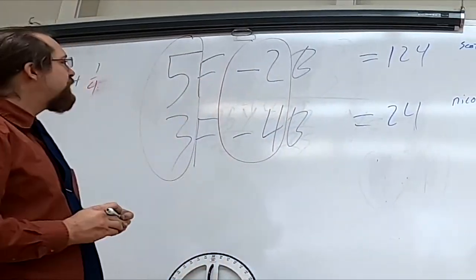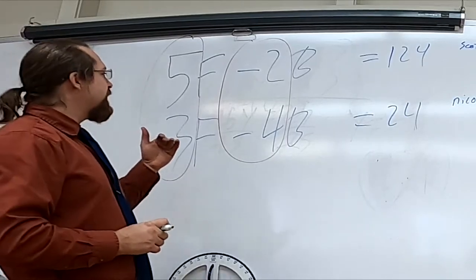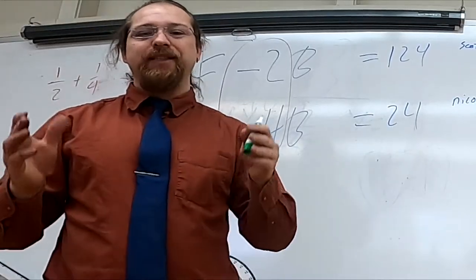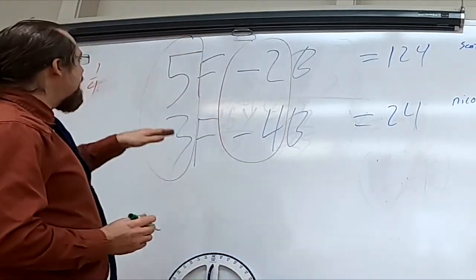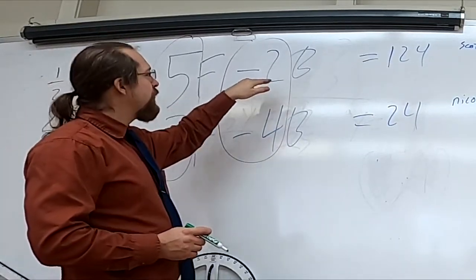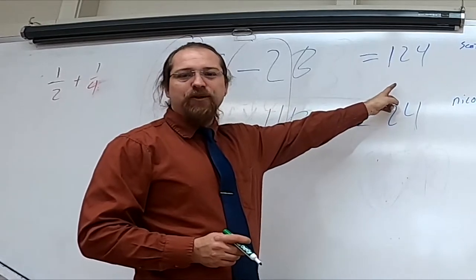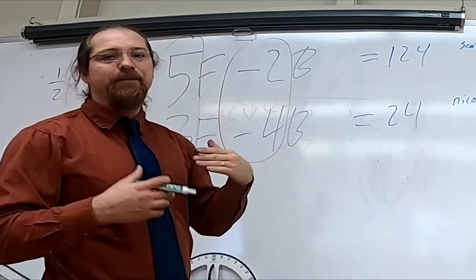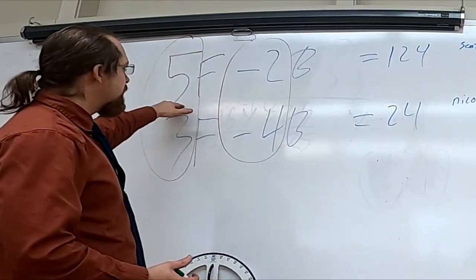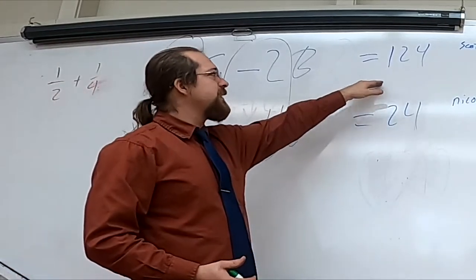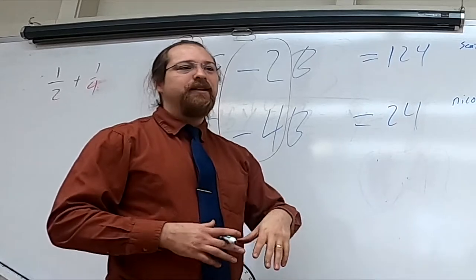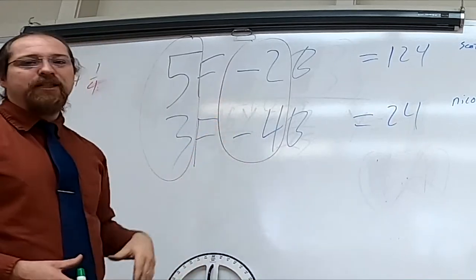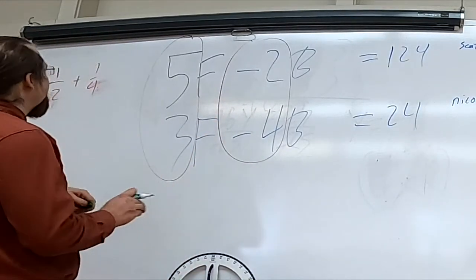And that's gonna give me a 4 that I need to make this match. Now I don't want them to match. I actually want them to be opposites. So instead I'm gonna need to multiply one of these. Let me take a moment to think about exactly what this means. I know that if you buy five footballs and you return two basketballs you'll end up with a total of 124 dollars. So that means if I double it, if I double the order, I'm going to buy 10 footballs and return four basketballs and that's gonna cost me 248 dollars. I'm doubling the order so that's gonna double the worth.